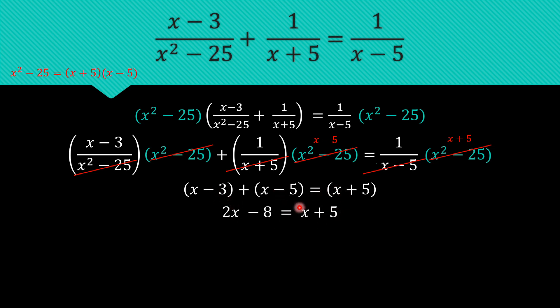And then the whole expression is equal to x plus 5. Now we try to combine the like terms and what we get would be x minus 13 and so the value of x would be 13.